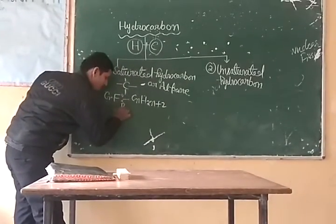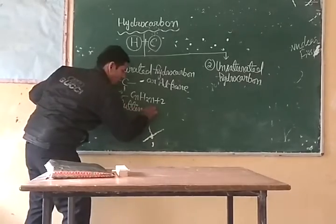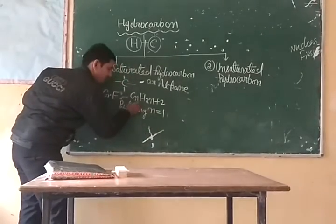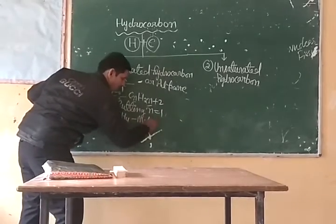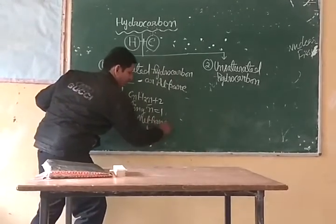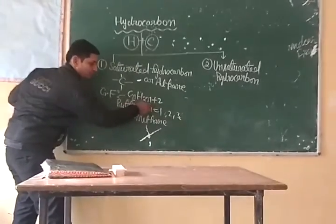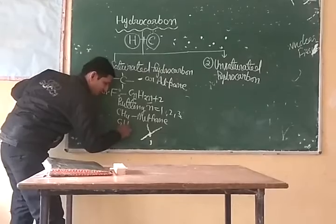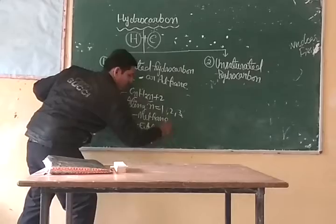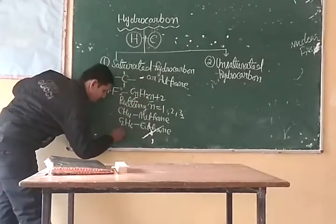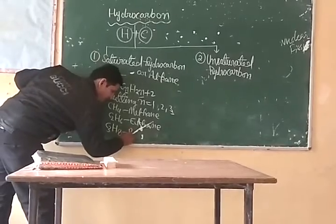Putting n equal to 1, we get CH₄. CH₄ is called methane. Similarly, putting n equal to 2, we get C₂H₆. It is called ethane. Putting n equal to 3, we get C₃H₈. It is called propane.